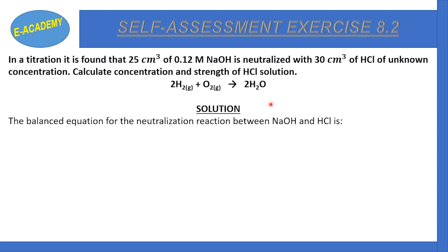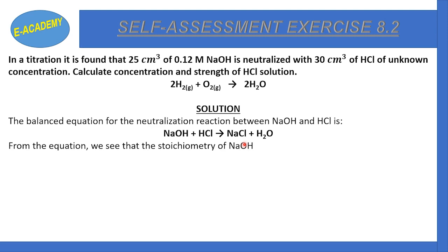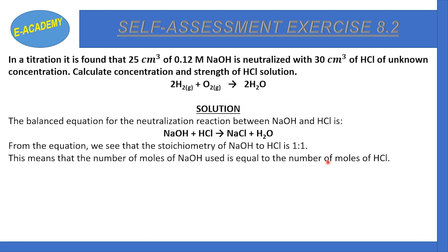The balanced chemical equation for the neutralization reaction is: NaOH + HCl → NaCl + H₂O. From the equation, the stoichiometry of NaOH to HCl is 1:1. This means the number of moles of NaOH used is equal to the number of moles of HCl used.